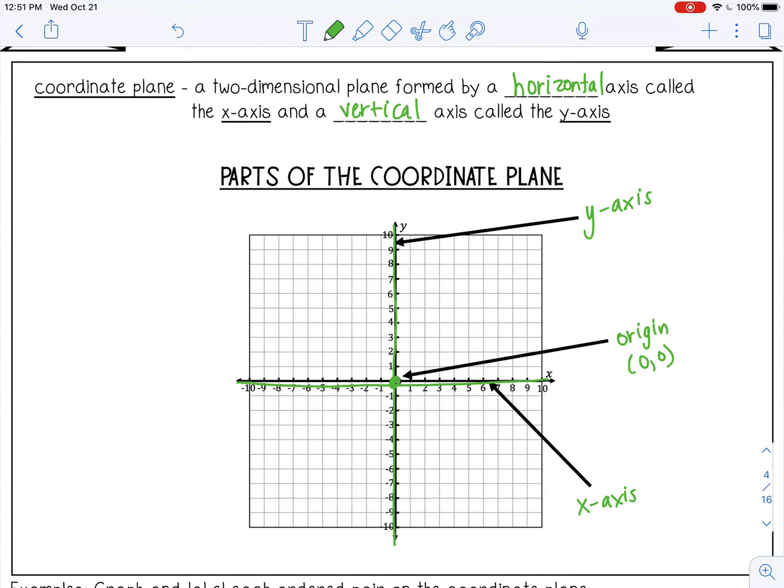There are four quadrants of a coordinate plane, four quarters. There's the first quadrant, the second quadrant, the third quadrant, and the fourth quadrant. They are labeled using Roman numerals.